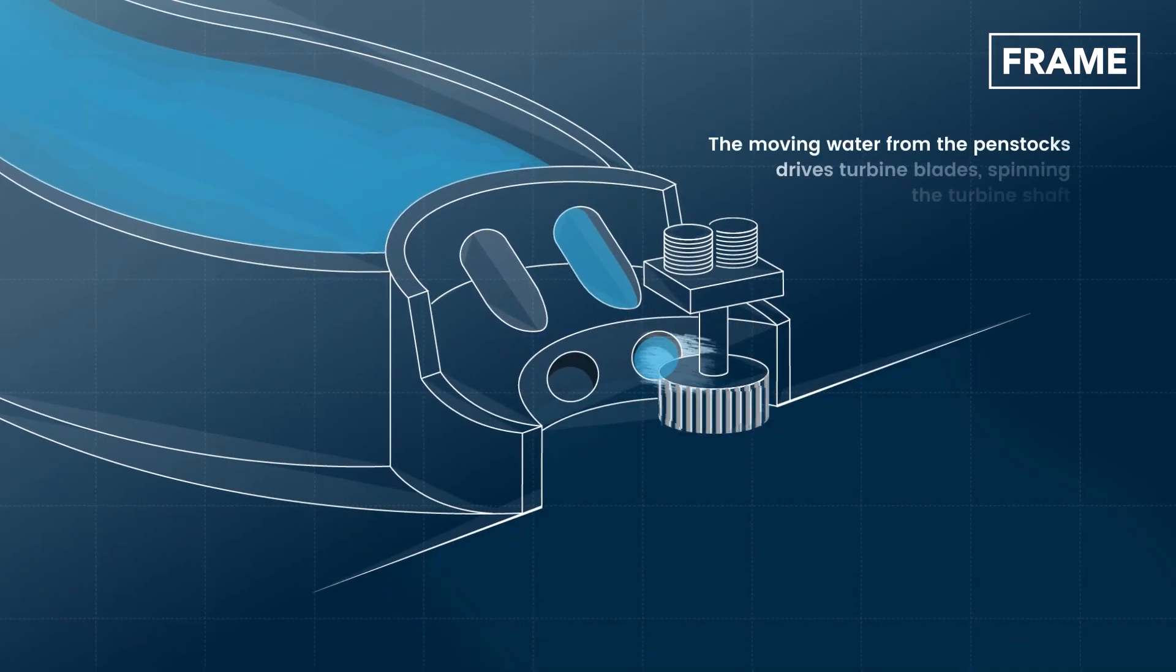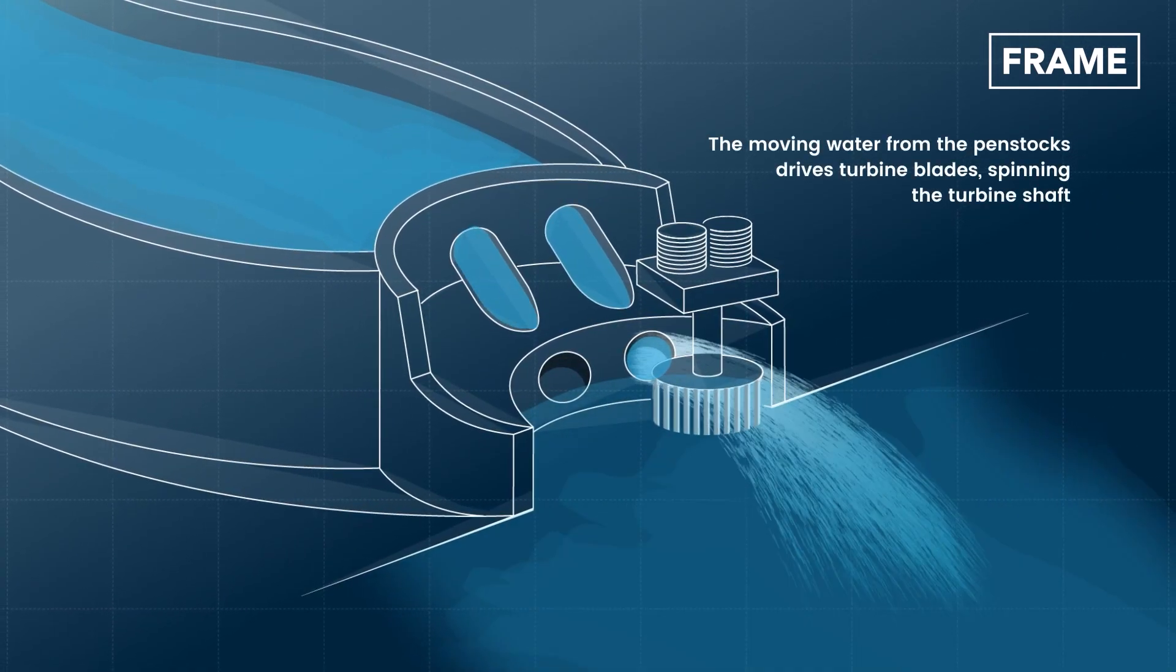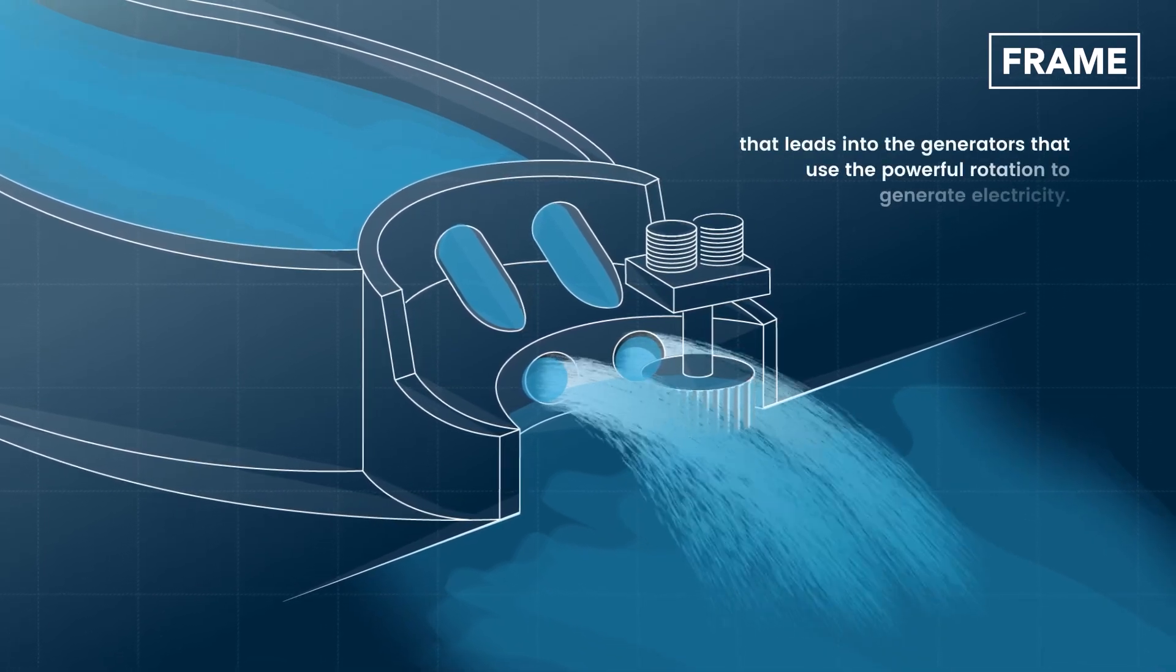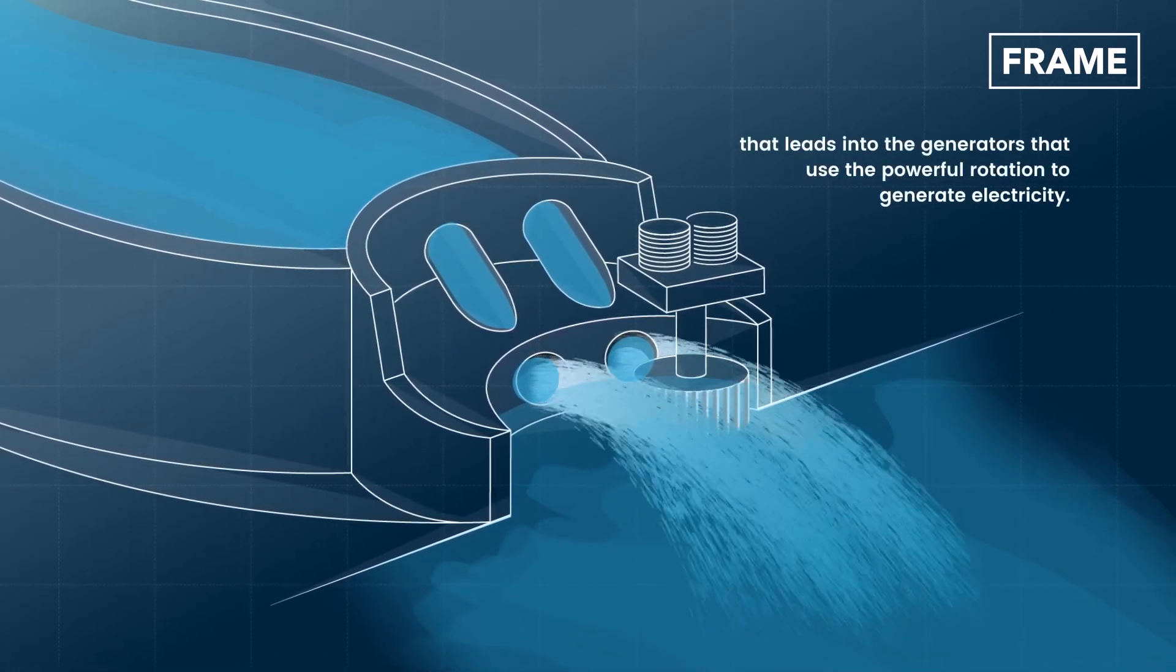The moving water from the penstocks drives turbine blades, spinning the turbine shaft that leads into the generators that use the powerful rotation to generate electricity.